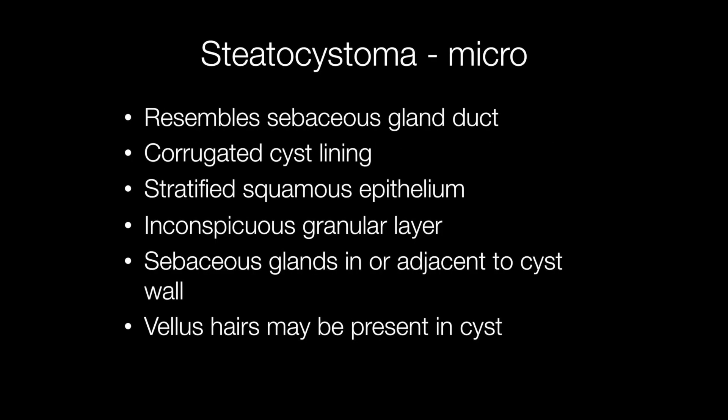Histologically, steatocystomas resemble sebaceous gland ducts. They have a corrugated cyst lining and the lining is composed of stratified squamous epithelium with an inconspicuous or absent granular layer. Sebaceous glands may be found in or adjacent to the cyst wall and vellous hairs may also be present in the cyst.